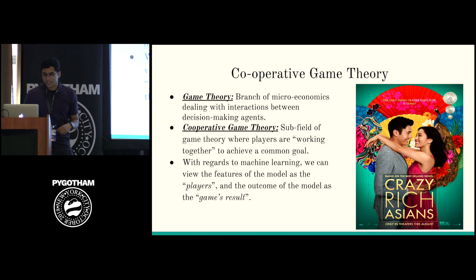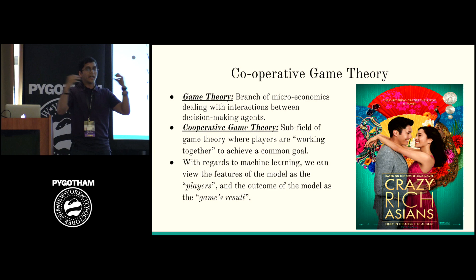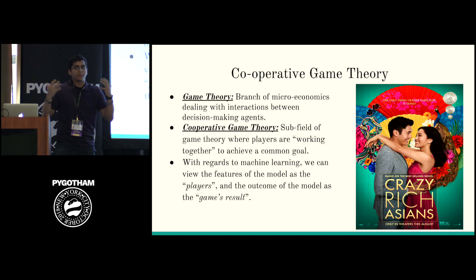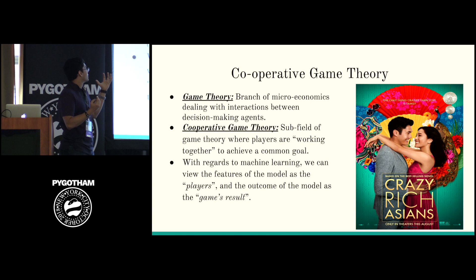Or it could even be, as in the movie Crazy Rich Asians, a woman competing against her boyfriend's mother — where the main character Rachel Chu, an economics professor at NYU, uses game theory to outwit her boyfriend's mother. Cooperative game theory is the branch where people work together to achieve a common goal — the mathematics of 'teamwork makes the dream work.' In machine learning, we view the features of the model as the players, and the outcome of the model is essentially the goal of the game — features working together to get the right prediction.